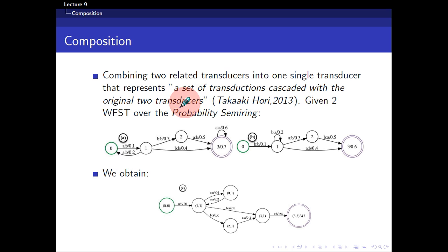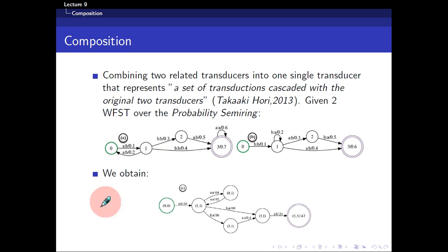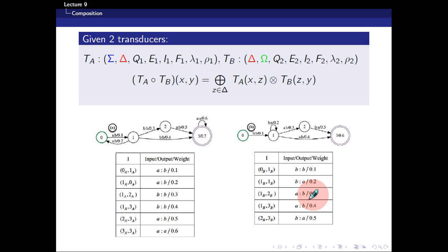I had trouble understanding what that meant, but thinking in terms of the example: TA specifically took in some input, TB gave off some output, so the resulting transducer would take in the original input of TA and give off the output of TB. If I am given two WFSTs and composite them together, I'll get a new transducer. Suppose we are given two transducers with sigma-delta as input-output labels and TB as delta-omega. One's output must equal the other's input, then you can composite them together.